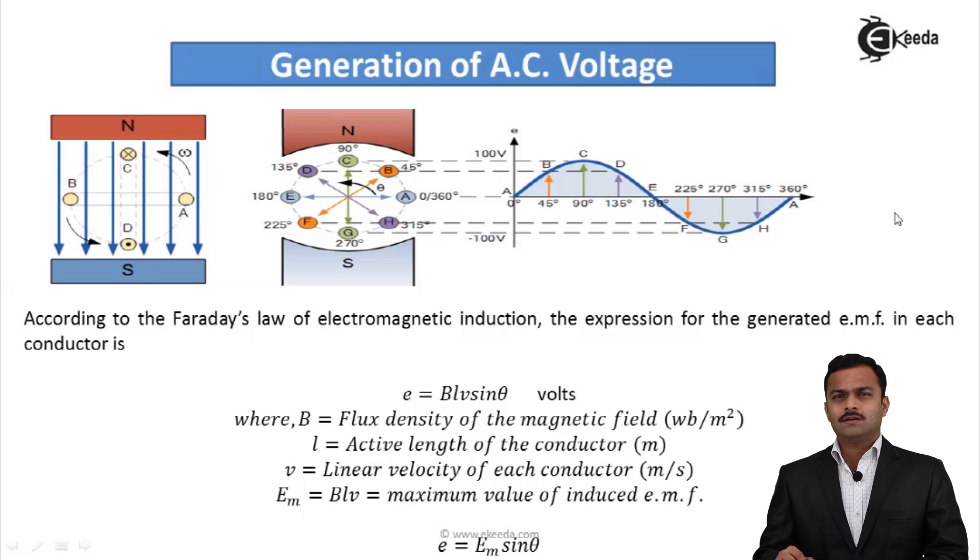So if I relate these terms, what I will get by Faraday's law of electromagnetic induction: EMF induced E is given by BLV sin θ. So whenever I see velocity is there, velocity has two components. One is V cos θ and second is V sin θ.